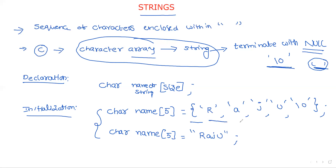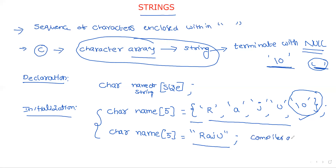You have to know the difference between these two initializations. In the first type, where the string is initialized character by character, you must explicitly pass the null character — it is compulsory. However, if you are initializing the string within double quotations, you do not need to pass the null character; the compiler automatically places it.